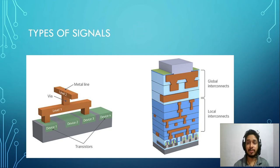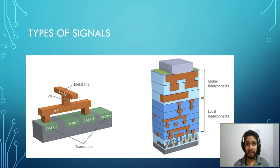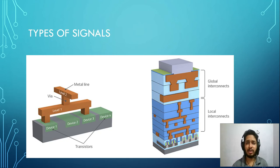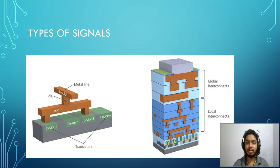Connections between blocks are categorized into two types: global interconnects and local interconnects. Local interconnects are connections between standard cells within a particular block — connections between adjacent cells of very small distance, maybe 0.1 to 0.2 microns. These connections happen at lower metal layers. Global interconnects, on the other hand, are routed in higher metal layers.